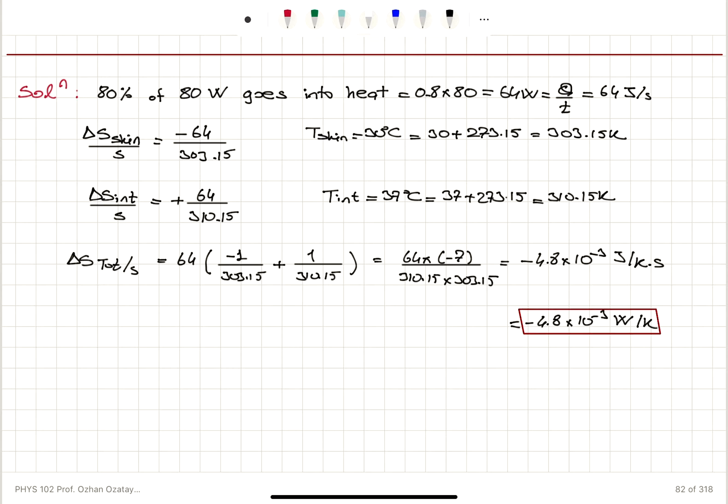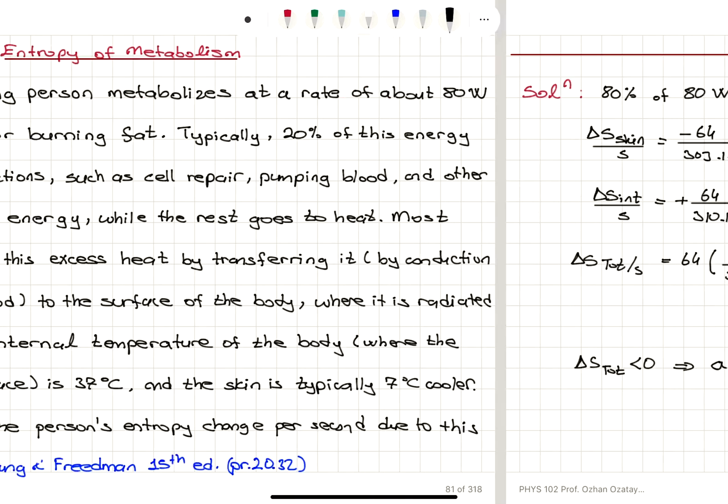Now, how can we explain that the entropy change is negative? Delta S total is negative. Well, we're not considering the heat provided to the ambient and that will have a contribution to the entropy change of the universe. So a person is not an isolated system. So you cannot argue that the entropy change of the person should be positive, but the entropy change of the universe should be positive. Therefore, this does not violate the second law of thermodynamics.